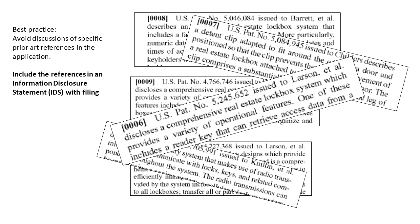We tell the examiner about the existence of these references using the Information Disclosure Statement, and if he or she applies those references against us, we are prepared with ammunition in our application to try and show the differences and advantages over the prior art. But the current wisdom is that there is not much upside to doing detailed descriptions of prior art patents and applications in the background of our application.